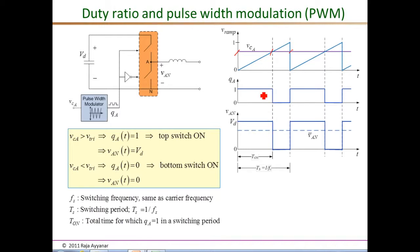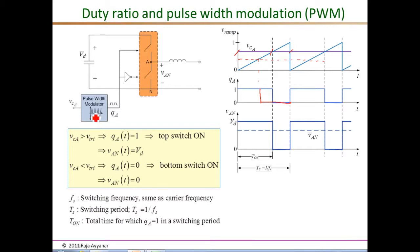We can draw the average of V_AN as a dotted line, and by changing the pulse width — the duration for which Q remains one — we can control this average voltage. The switching period T_S is one over the switching frequency F_S, which is the same as the carrier or triangle ramp frequency.